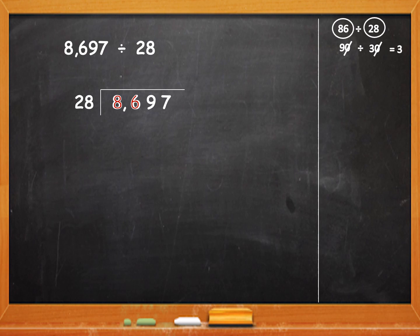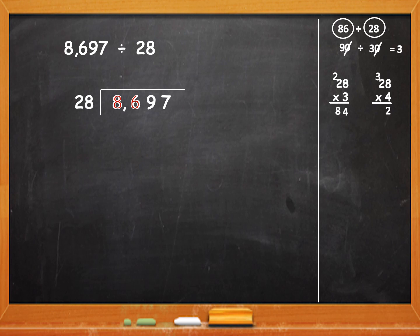This means 28 will go 3 times in 86. But we can't write that as the answer — we have to cross check. We will multiply 28 into 3: 3 eights are 24, carry over 2, 3 twos are 6 plus 2 is 8, so 84. 84 is less than 86. But to be sure, we will check 28 into 4 also: 4 eights are 32, carry over 3, 4 twos are 8 plus 3 is 11, giving 112. 112 is greater than 86. So it is 28 into 3. Write 3 as the quotient. 28 threes are 84. When you subtract, the remainder is 2.